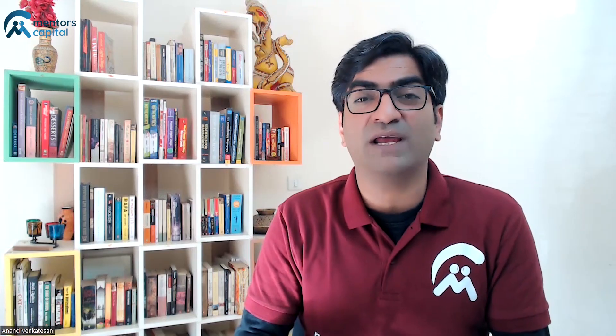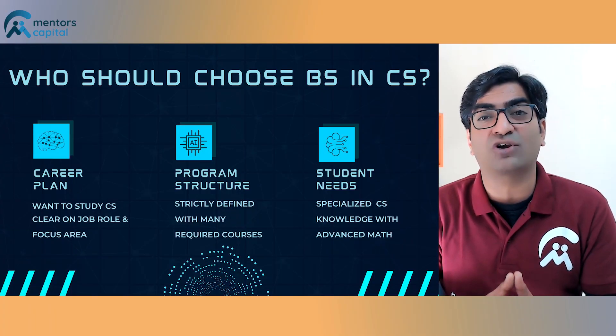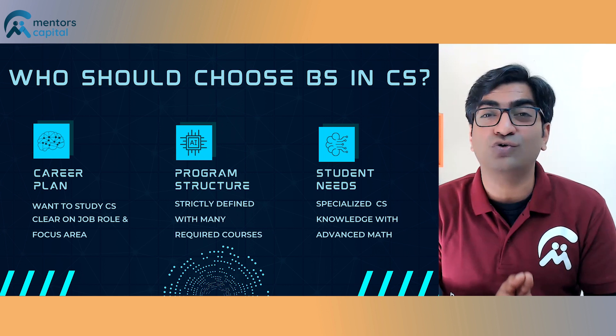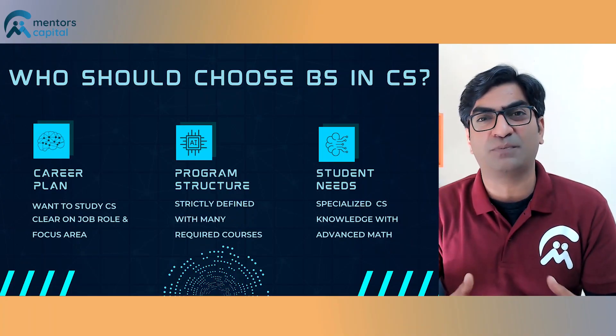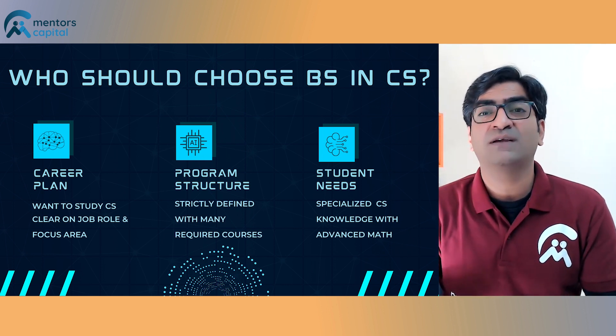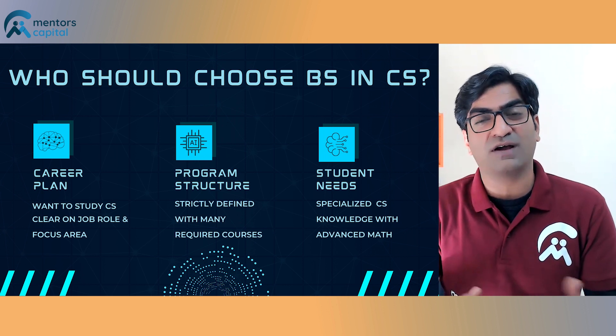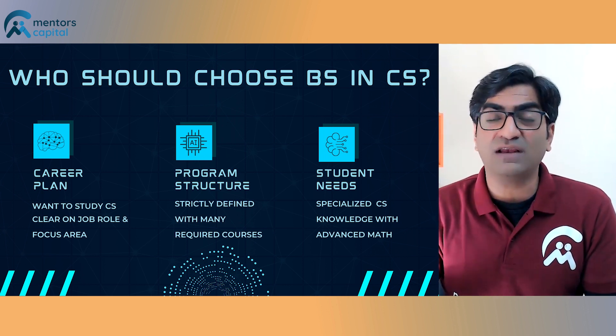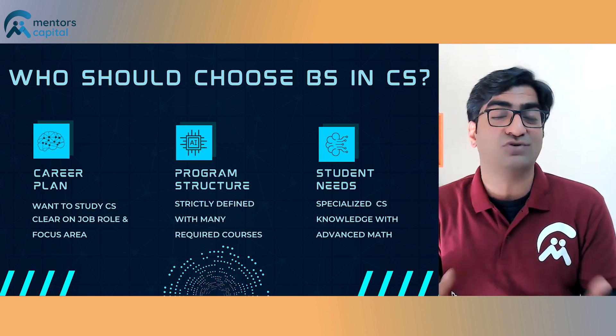Who should choose the Bachelor of Science program in computer science? If you are somebody who is very sure about what you want to do in the field of computer science — the exact area of specialization, whether it's artificial intelligence, machine learning, or systems design — then the Bachelor of Science program is more suited to you. The program structure of a typical BS offered by US universities is very strict in terms of curriculum, with a lot more required courses from the field of computer science.